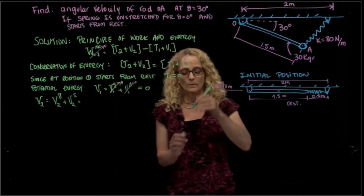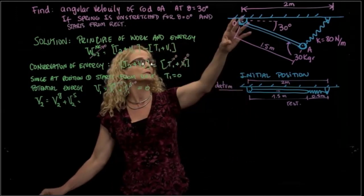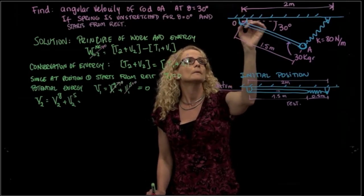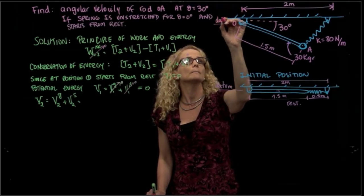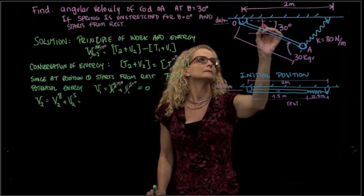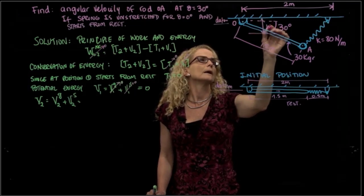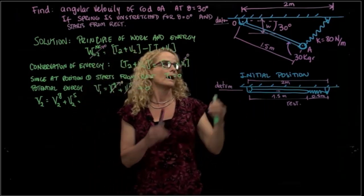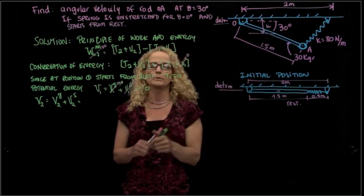Which will be equal as well as the gravity and the spring. The gravity, well, then we have our second position. This is the second position, the final position. And we have the datum in the same place. So we here need to find this distance right here, h, to be able to know how much is the drop in potential energy.